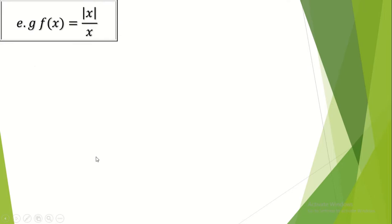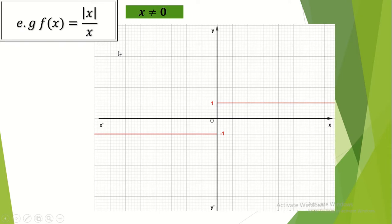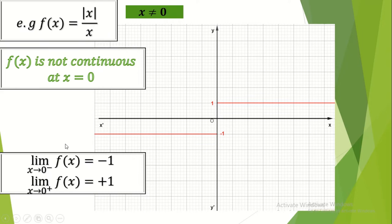Another example: f(x) = |x|/x. When the denominator x is 0, this function will not be continuous. Note that the limit as x→0⁻ for f(x) will be −1, since when x is negative, |x| = −x, so −x/x = −1. The limit as x→0⁺ will be +1, since |x| = x exactly. Here we also have an example of a discontinuous function.